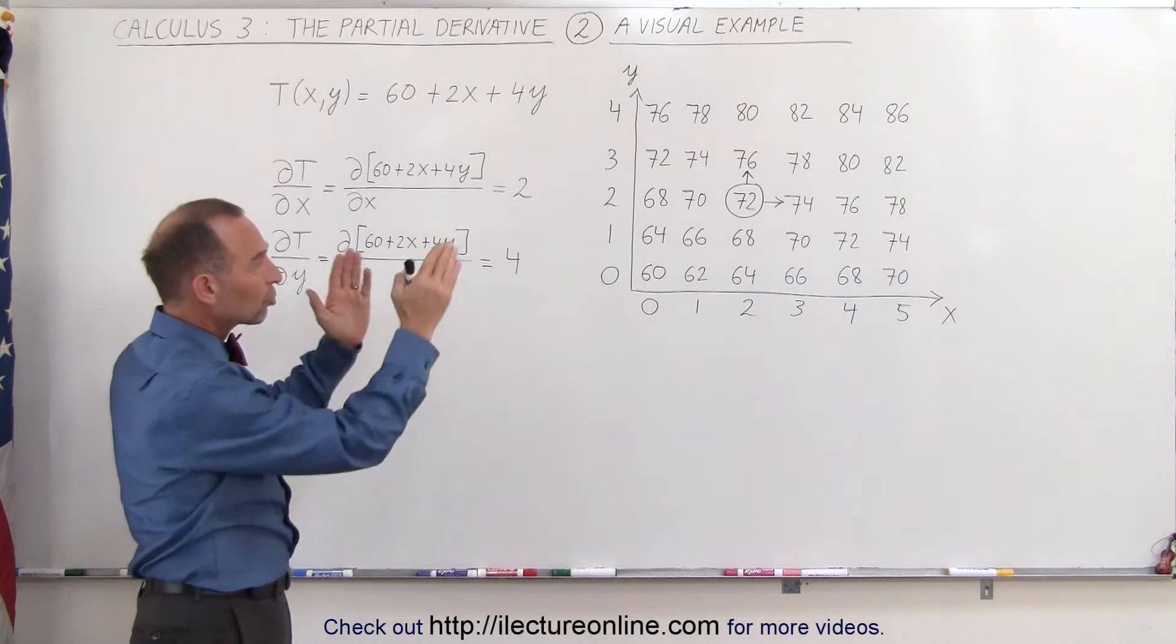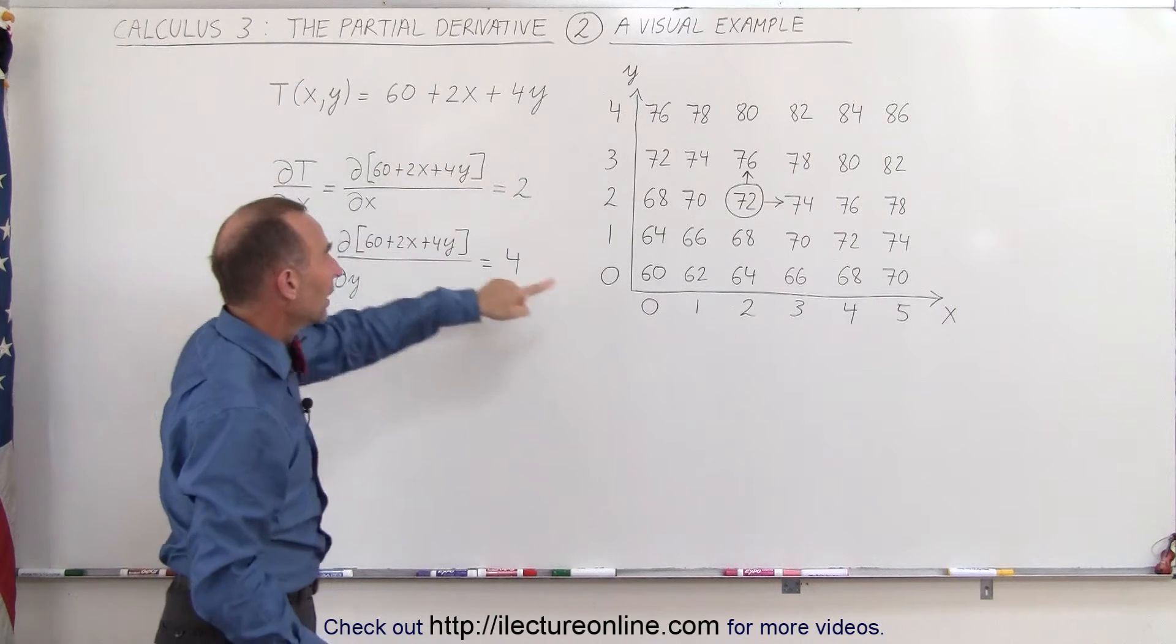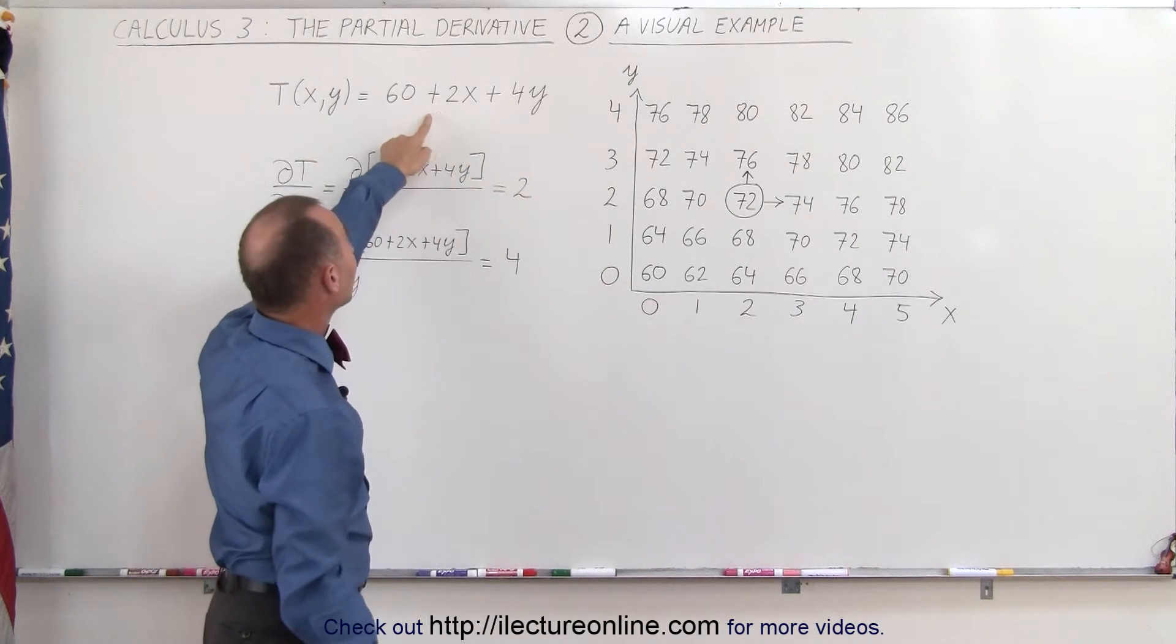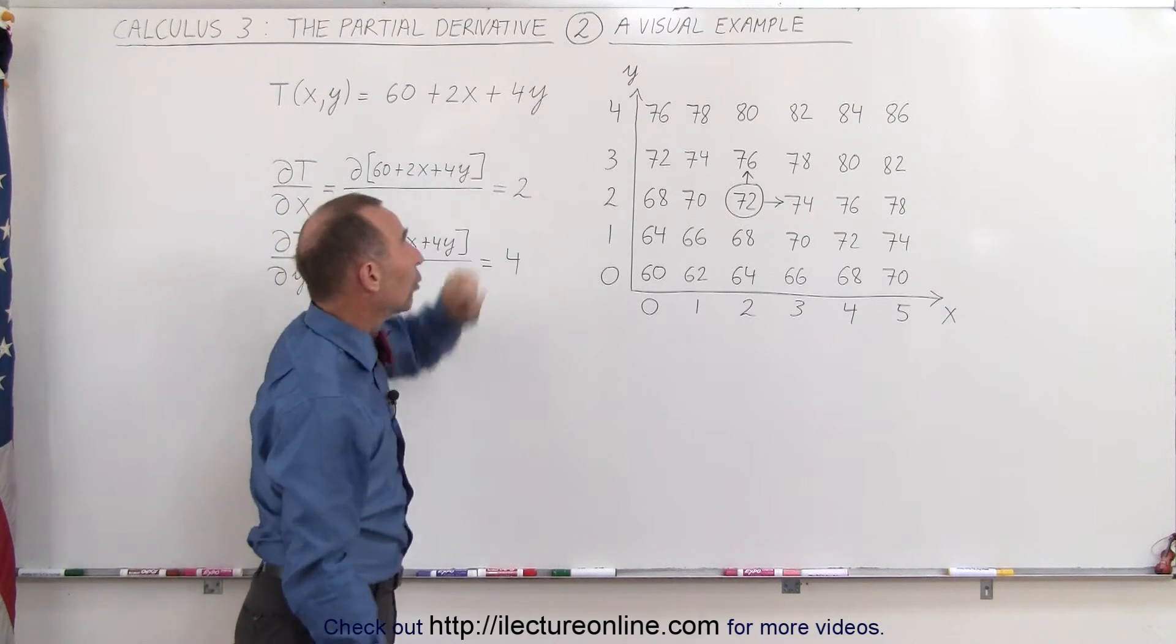The function that describes that is right here. The temperature as a function of x and y is equal to 60 when x and y are zero, and then as x changes, plus 2x, and as y changes, plus 4y.